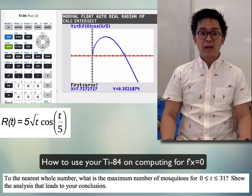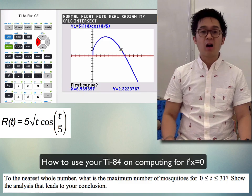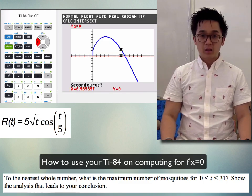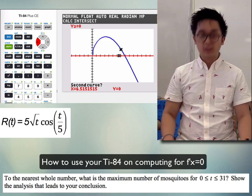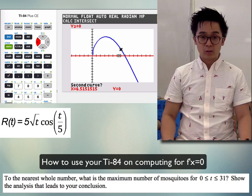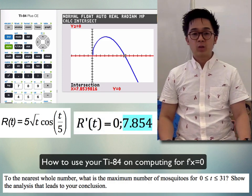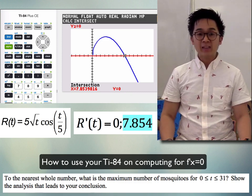It will ask you to place your cursor on the first curve, so put it on the derivative function (the blue graph). It will then automatically move to the second function, which is y = 0 — push Enter. The TI-84 will give us the actual point of intersection of our derivative function and the x-axis, which is 7.8539.